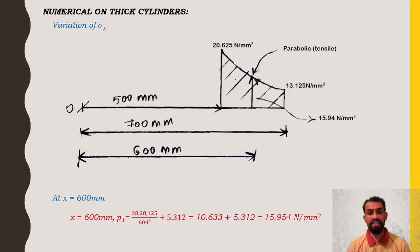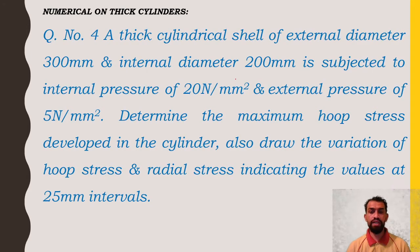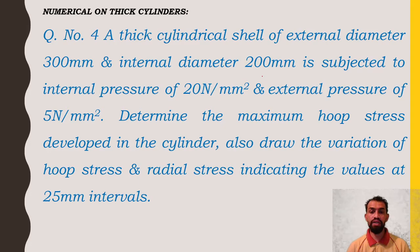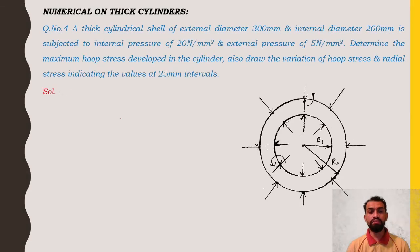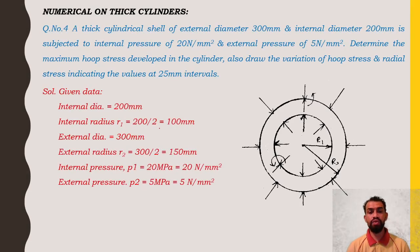Moving to the second problem: a thick cylindrical shell of external diameter 300 mm and internal diameter 200 mm is subjected to an internal pressure of 20 N/mm² and external pressure of 5 N/mm². Determine the maximum hoop stress and draw the variation of hoop stress and radial stress at 25 mm intervals. Internal radius r1 = 100 mm, external radius r2 = 150 mm.